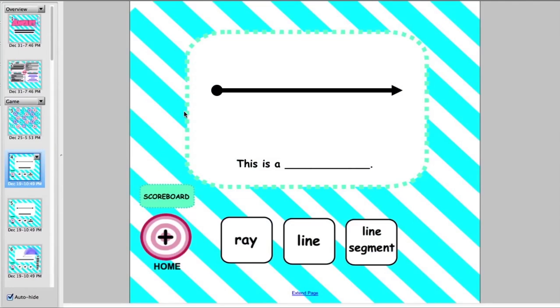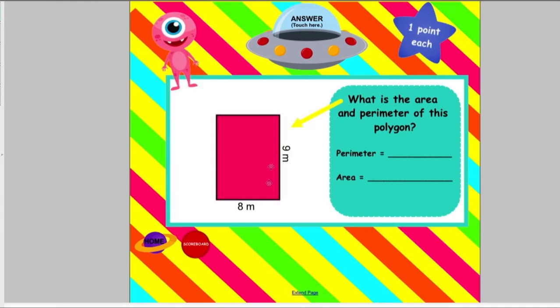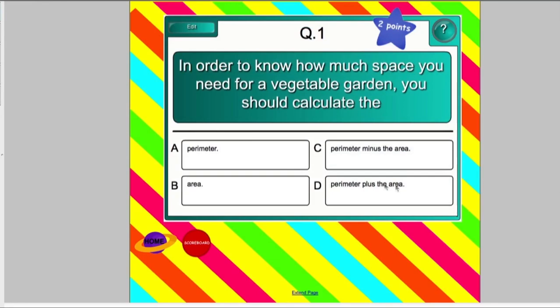In the area and perimeter game, students will calculate area and perimeter by counting centimeter squares and by using algorithms. They will also calculate the missing side of an area or perimeter problem and answer word problems that include area and perimeter. Students touch the spaceship to self-check their answers.